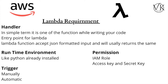The next requirement is the trigger — how we need to trigger our code. It might be automatic, like an event in DynamoDB, an event in S3 bucket that triggers the Lambda function, or we can do it manually by going to the Lambda function and running the code. For permissions in Lambda, we can assign an IAM role or we can use an access key and secret key. Using an IAM role is more secure, which is a benefit of Lambda.